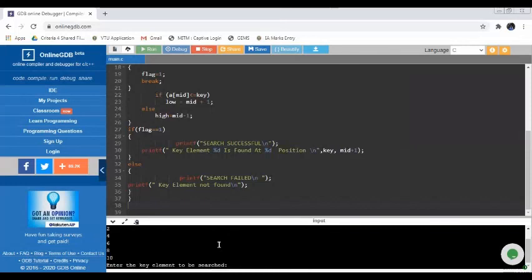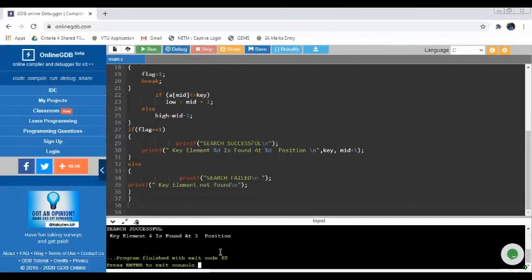Now, the program is asking you to enter the key element to be searched. For example, if I want to search 6, I will enter 6. When the search is successful, the program is saying that the search is successful and the key element is found at the position 3. This is how the key element will be found using the binary search.